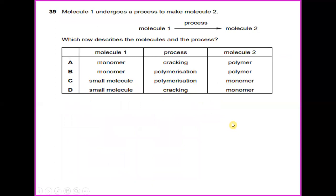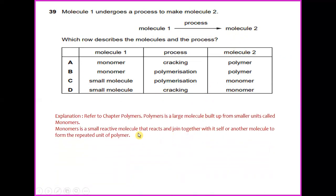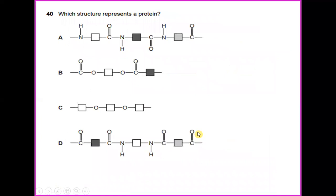Question 39. Molecule 1 undergoes a process to make molecule 2. Which row describes the molecules and the process? It's in the process of monomer and the process is called polymerization and this is polymer. The answer would be B. Refer to chapter polymers. A polymer is a large molecule built up from smaller units called monomers. Monomers are small reactive molecules that react and join together with itself or another molecule to form the repeated unit of polymer.